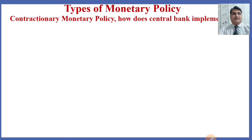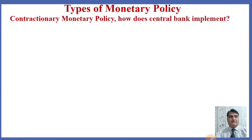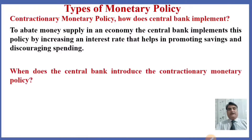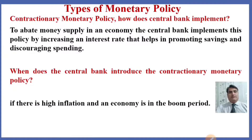The other type of monetary policy is contractionary monetary policy. To abate money supply in an economy, the central bank implements this policy by increasing the interest rate, which helps in promoting savings and discouraging spending. The central bank implements this when there is high inflation and the economy is in the boom period.